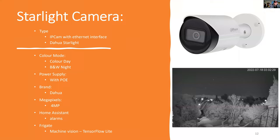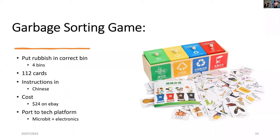The starlight camera was a very interesting project. Here's a picture from my front garden — what's interesting is that the camera is so sensitive to low light that it will pick up even the stars. You can use it outside at night and it will pick up color at night. I'm using it with machine intelligence and artificial intelligence to detect events for my security system. I also received a game from China on garbage sorting, and one of the ideas is to port this onto a tech platform with MicroBit and some electronics.